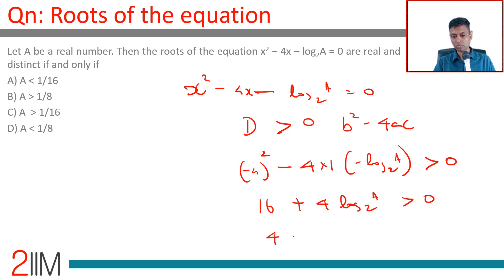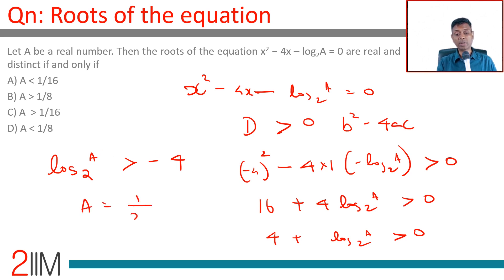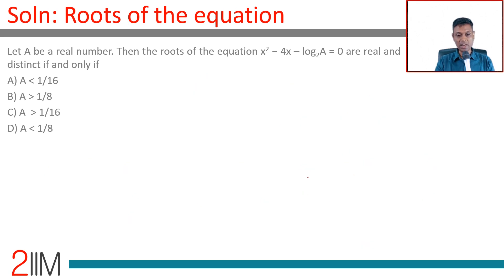Dividing through, 4 plus log a to the base 2 is greater than 0, so log a to the base 2 is greater than minus 4. If log a to the base 2 were equal to minus 4, then a would equal 1 over 2 to the power 4, which is 1 over 16. Therefore, a must be greater than 1 over 16.